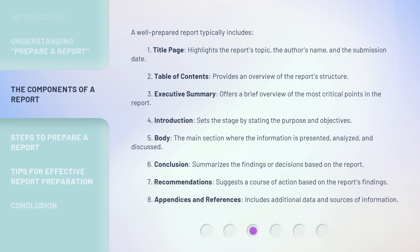4. Introduction — sets the stage by stating the purpose and objectives. 5. Body — the main section where the information is presented, analyzed, and discussed. 6. Conclusion — summarizes the findings or decisions based on the report. 7. Recommendations — suggests a course of action based on the report's findings. 8. Appendices and References — includes additional data and sources of information.